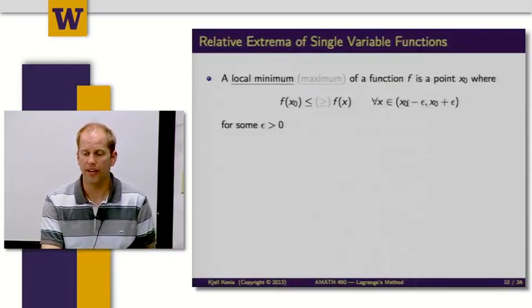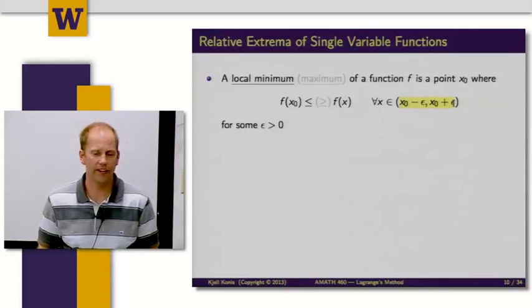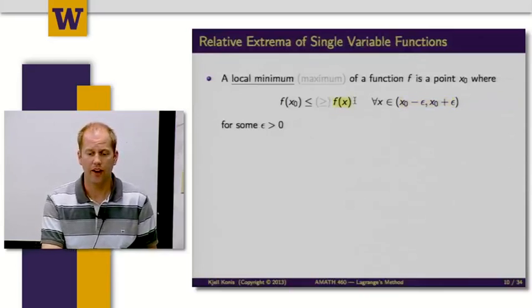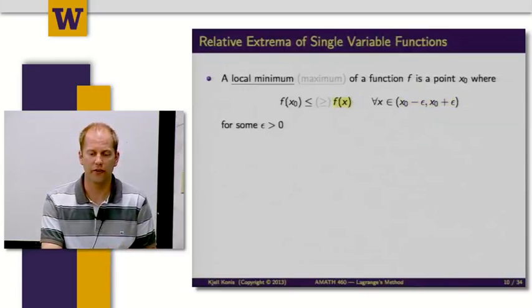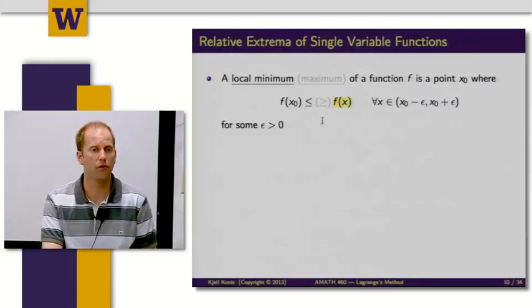I'm making an interval centered on x0. And at every point in that interval, f(x) is greater than or equal to f(x0). If that's true, I'm going to call f(x0) a local minimum.